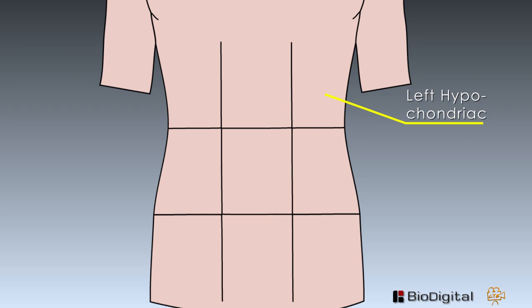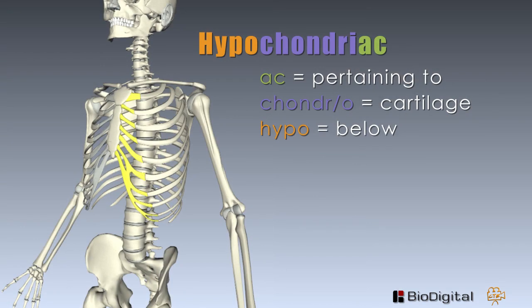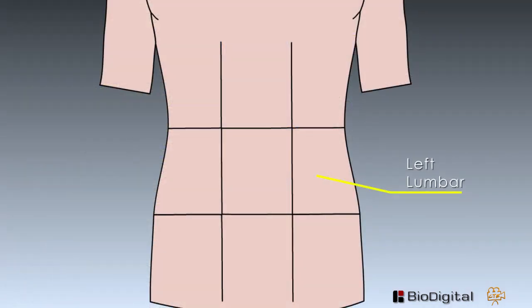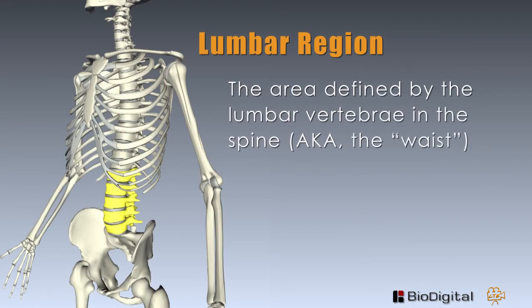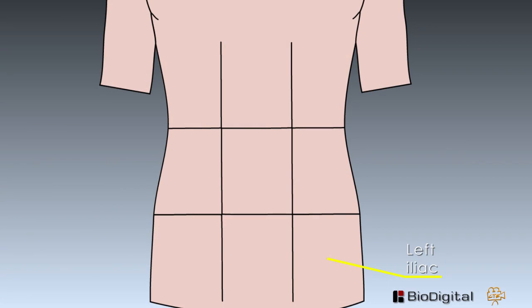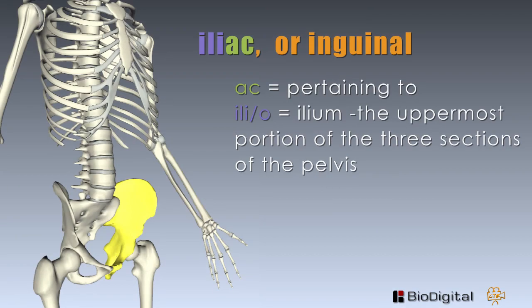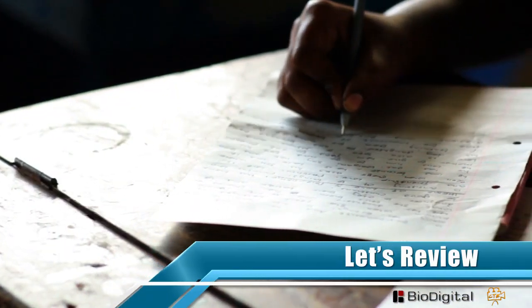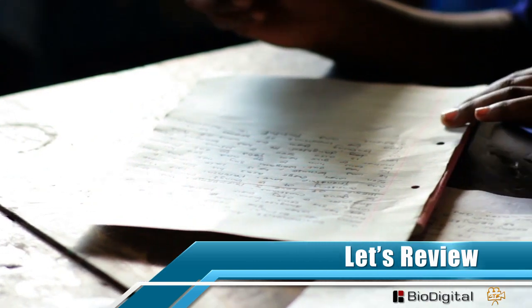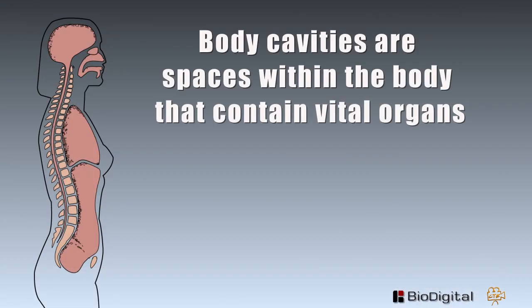The left section is the same as the right, except on the opposite side. We have the left hypochondriac, located in the abdominal region below the ribs. The left lumbar region again is related to the area of the vertebrae in the spine known as the lumbar. And the left iliac is the left side of the groin area.